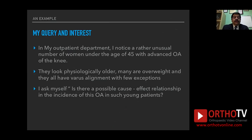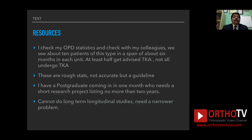In orthopedics, consider this common example. In my outpatient department, I notice an unusual number of women under the age of 45 with advanced osteoarthritis of the knee. They look physiologically older, many are overweight, and they all have varus alignment with few exceptions. I ask myself: is there a possible cause-effect relationship in the evidence of this varus in such young patients? So I check my OPD statistics and check with colleagues. They see about 10 patients of this type in a span of about six months in each unit. These are rough stats — not accurate — but a guideline on the magnitude of the problem.